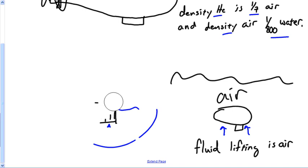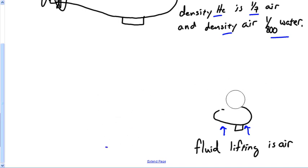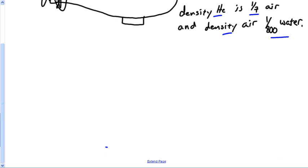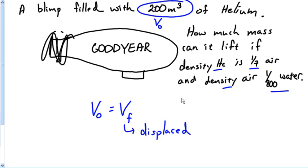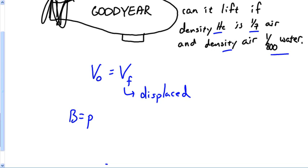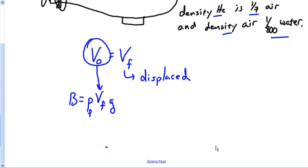This blimp is submerged — that's so important because it tells us something huge: if the blimp is fully submerged, then the volume of the object equals the volume of the fluid displaced. The buoyancy equation is: buoyancy = ρ_fluid × V_fluid × g. Since it's completely submerged, the volume of the object equals the volume of the fluid.